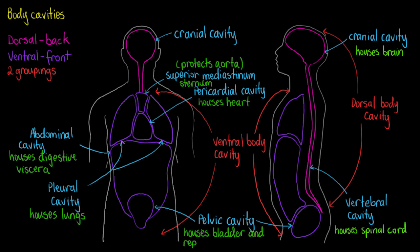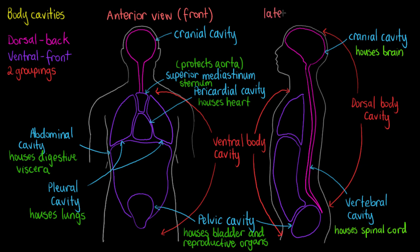All of these separate cavities are just extra measures of protection and separation for all of the organs within your body. One last point: the ventral cavities have a lot more subdivisions than our dorsal cavities. We also have an anterior view, which is the person facing the front, and a lateral view, which is the side-on view — important directional terminology to familiarize ourselves with. So to make things easier, we group the top segment together and refer to it just as the thoracic cavity.